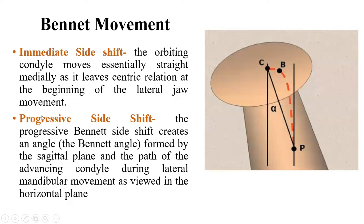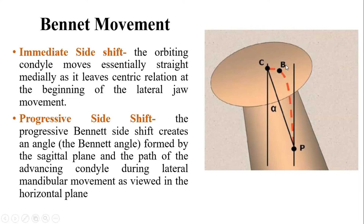What are they? The immediate side shift is the linear motion — a straight line where the condyle will move essentially in a straight line medially. From C to B, the condyle will not move anteriorly at all. The condyle will move medially without anterior movement, and this is called the immediate side shift. This will be approximately one to two mm where there is no anterior movement, but as soon as the condyle starts to move, it first moves medially and then moves anteriorly.